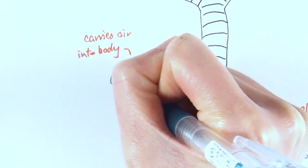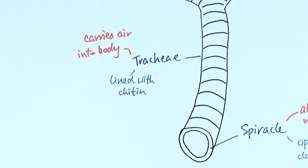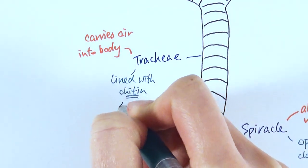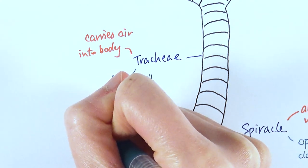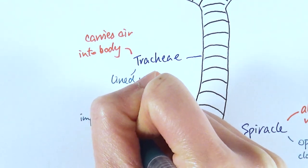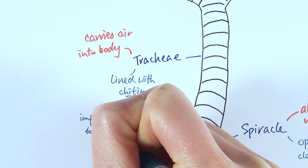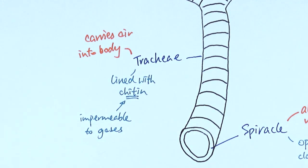We say that chitin is specifically important. It is, number one, impermeable to gases. So what that means is that gases cannot actually diffuse in and out of the trachea. So we say that is not where gas exchange actually occurs.